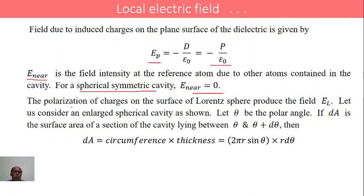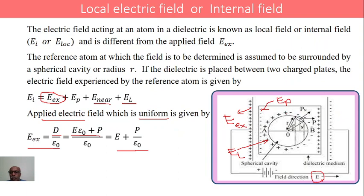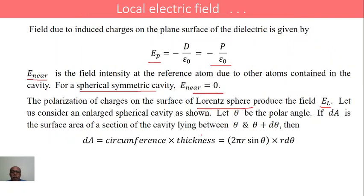Finally, the fourth one: the polarization of the charges on the Lorentz sphere gives rise to the Lorentz field. One side of the sphere will be positively charged and on the other side there will be negatively charged. On the surface of the sphere, half is positively charged and the other half is negatively charged. This imaginary sphere is called the Lorentz sphere. Because of this charge distribution, it is polarized, and the resulting field is called the Lorentz field, EL.